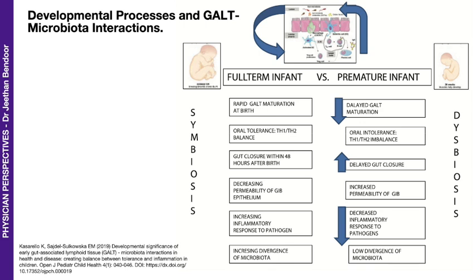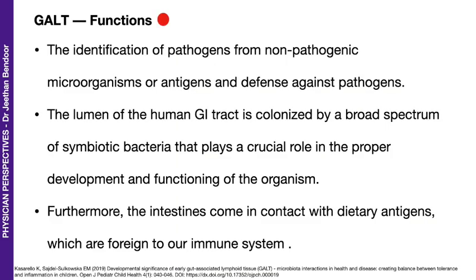It sets the stage for the interaction of these living organisms with us, because of a healthy gastrointestinal barrier, and these interactions take us into the next level of immunity as well as health. Let's look at the broad-based functions of the GALT — the gut-associated lymphoid tissue — and why such a big fuss is made about the symbiotic situation. The GALT is important in the identification of pathogens from non-pathogenic organisms or antigens, and defense against pathogens.